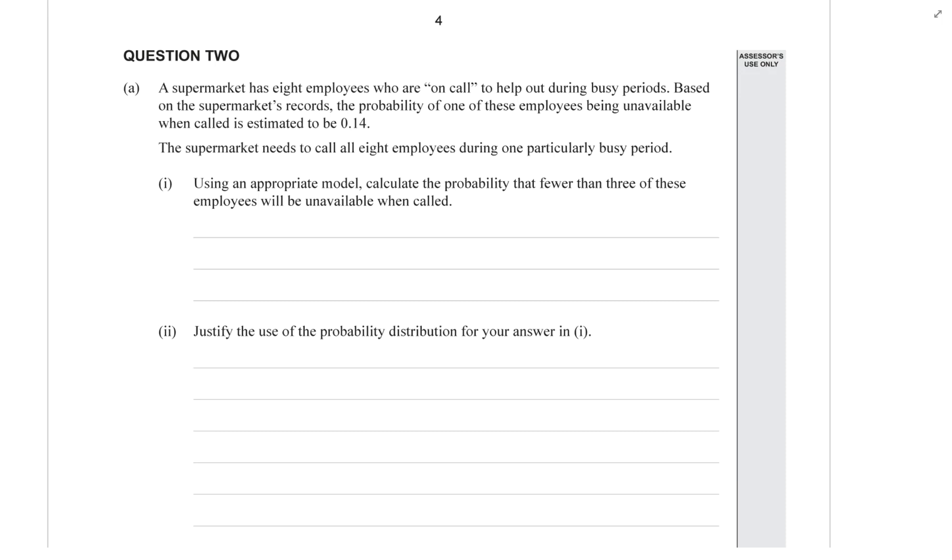This is question 2A of the 2016 Probability Distributions Exam. A supermarket has 8 employees who are on call to help out during busy periods. Based on the supermarket's records, the probability of one of these employees being unavailable when called is estimated to be 0.14.